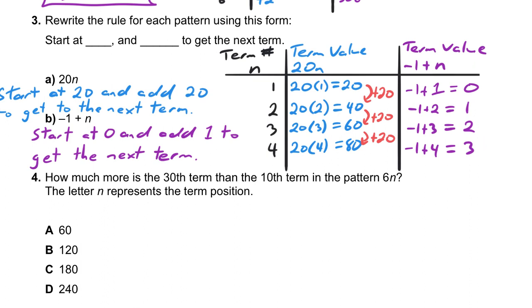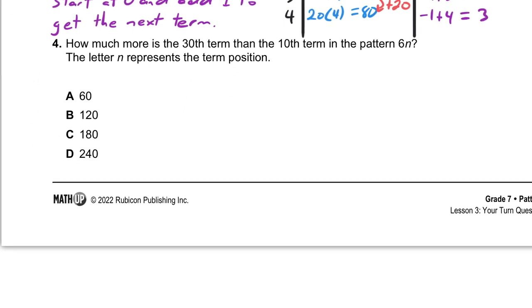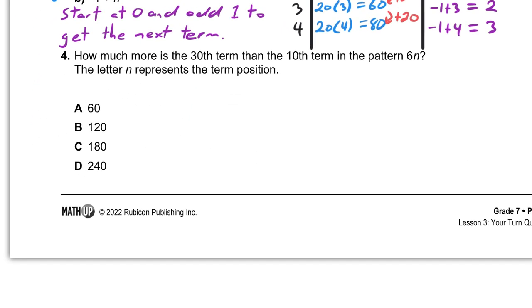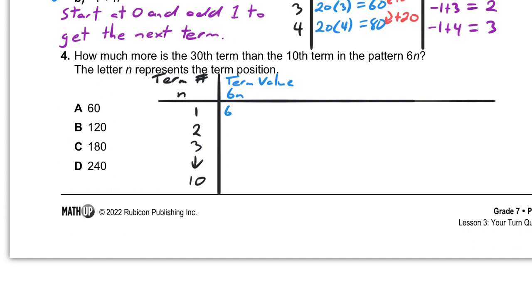Okay, lastly we have, how much more is the 30th term than the 10th term in the pattern 6n? The letter n represents the term position. Once again, I'm going to make a table of values. So here's our table of values, and we can just go down the line and replace the n for whatever value it is at that spot. So here it's 6 times 1, so the value is going to be 6. Here it's going to be 6 times 2, and so the value is going to be 12.